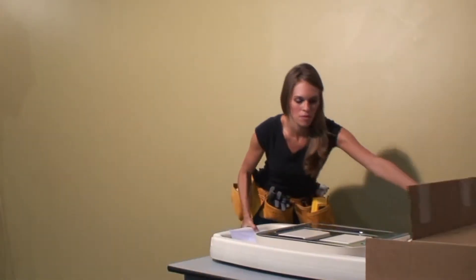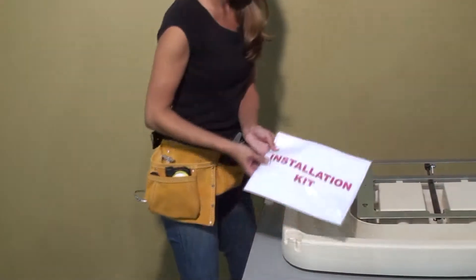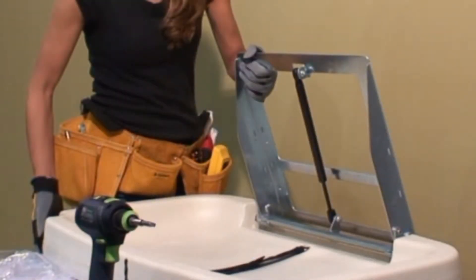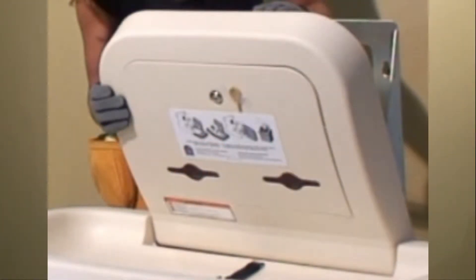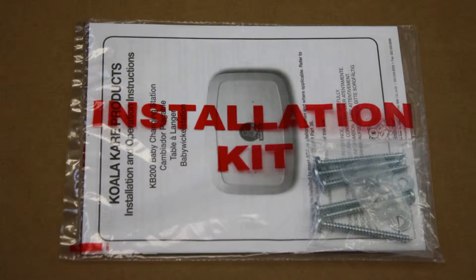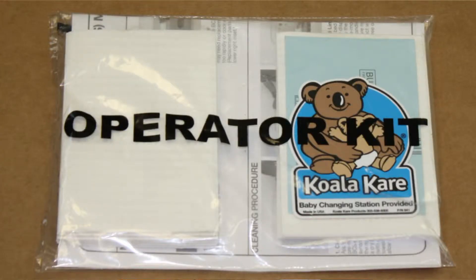Now unseal the KB200 box and remove the contents. Enclosed is the bed and metal mounting chassis which is one piece, wall mount liner dispenser and two kits, an installation kit and an operator kit clearly printed on the bags of the kits.